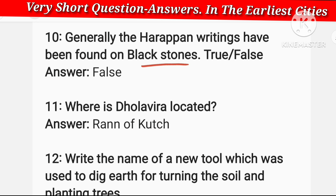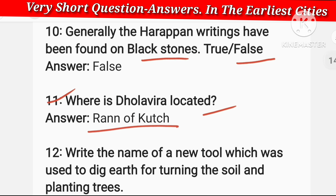Generally, Harappan writings have been found on black stone — this is false. Where is Dholavira located? Dholavira is in Rann of Kutch, which is in Gujarat.